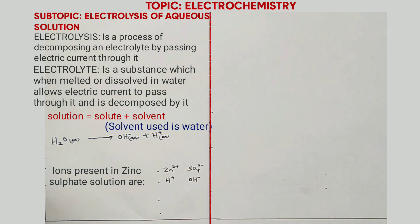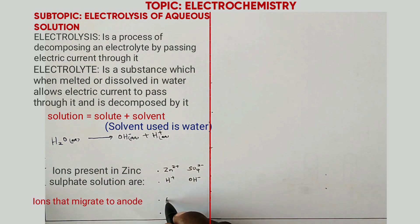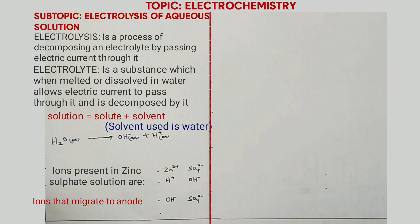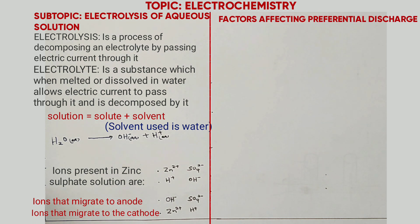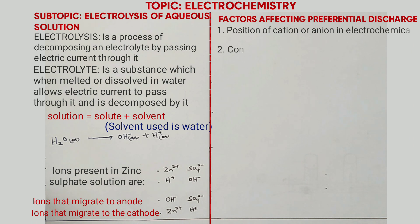The ions that migrate to the anode are hydroxide ions and sulfate ions, because the anode is positively charged so negatively charged ions migrate to it. The ions that migrate to the cathode, which is negatively charged, are zinc ions and hydrogen ions. At each electrode only one ion is discharged — this is called preferential discharge. The factors that affect preferential discharge are: (1) position of the ion in the electrochemical series, (2) concentration of the electrolyte, and (3) nature of the electrode used.